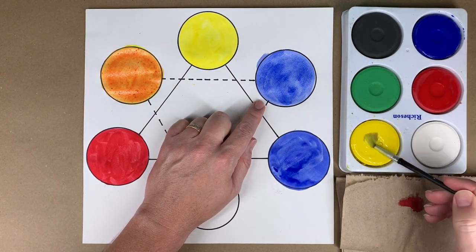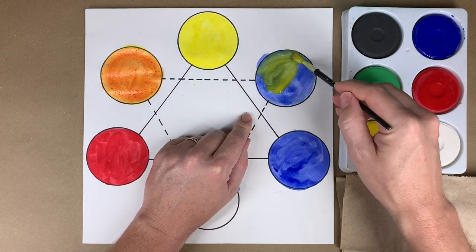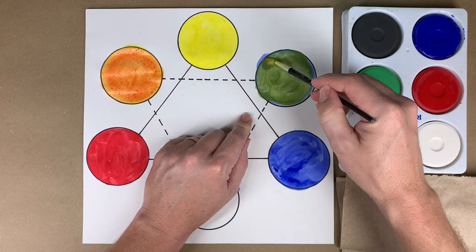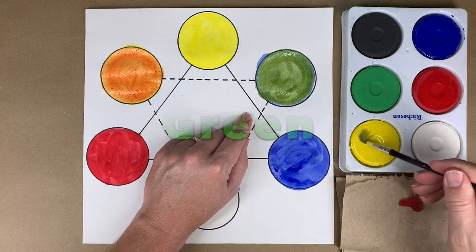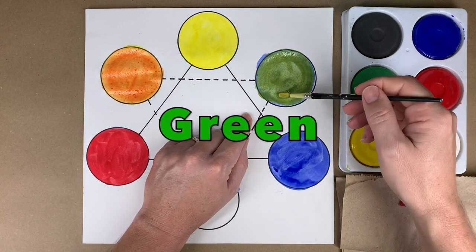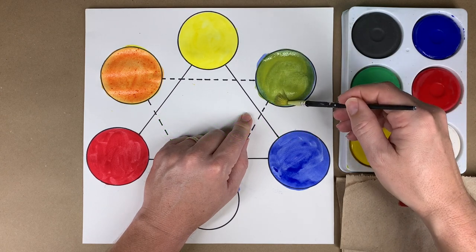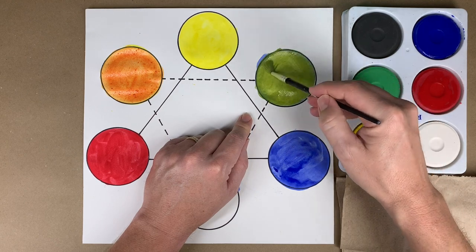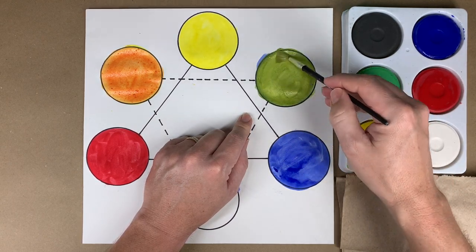I'm going to add it, clean it on, add some more yellow. Mix it up really well. I've got a yellow green color.